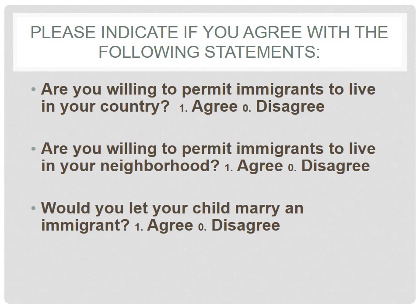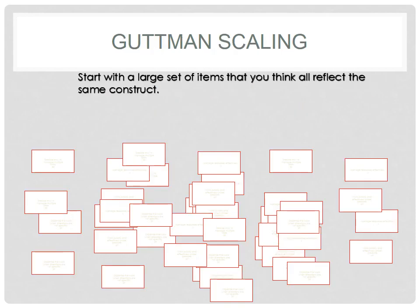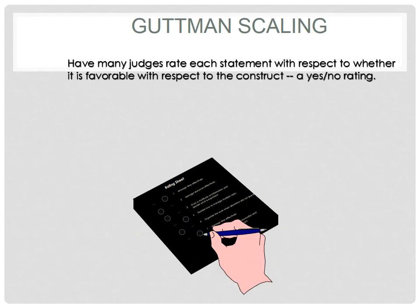Similar to what we do in a Likert scale, Guttman scaling begins with a large set of items. You start with a very large pool — 80 to 100 items is the minimum. Unlike a Likert scale, in a Guttman scale, you have judges rate each item with respect to whether it is favorable to the construct. Rather than using a one-to-five response scale, they use a yes or no rating. If they think it favorably reflects the construct, they say yes; if not, they say no.